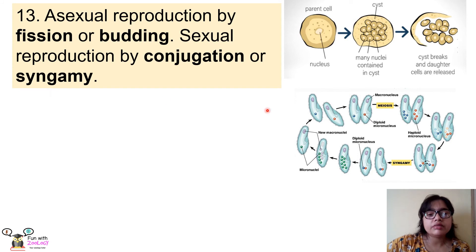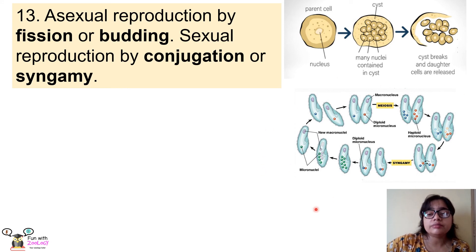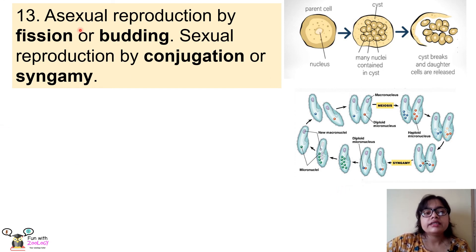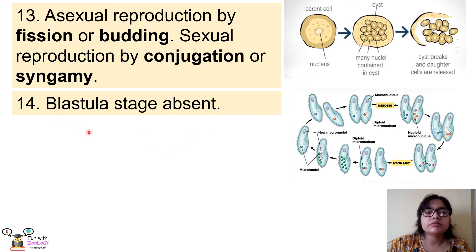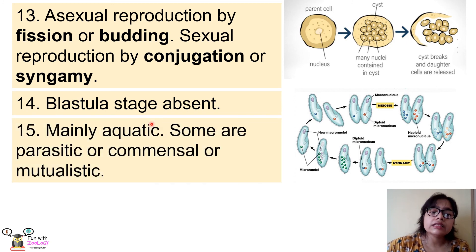Sexual reproduction occurs by conjugation or syngamy. Two individuals are needed for reproducing, and importantly, exchange of genetic material or nucleus takes place. As shown in the image of conjugation in Paramecium, genetic material is exchanged between two individuals, helping revive the characters of the offspring. Reproduction occurs by two methods: asexual by fission or budding, and sexual by conjugation or syngamy. Importantly, no embryo forms in this process, so no blastula stage is found in protozoans.